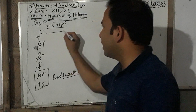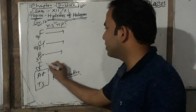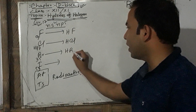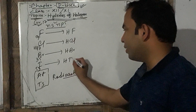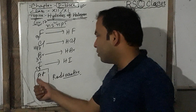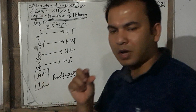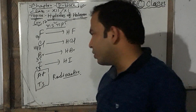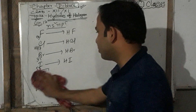The hydrides of these halogen elements are: HF (hydrogen fluoride), HCl (hydrogen chloride), HBr (hydrogen bromide), and HI (hydroiodic acid or hydrogen iodide). Astatine and tennessine do not form stable hydrides because their half-life periods are very short, making them unstable.